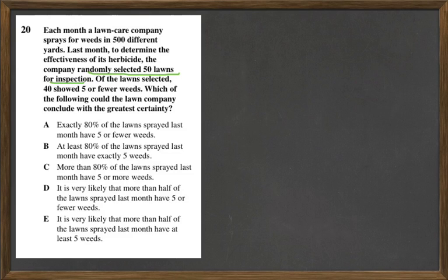Okay, so this is just a sample size. Of the lawns selected, 40 showed 5 or fewer weeds. Which of the following could the lawn company conclude with the greatest certainty?